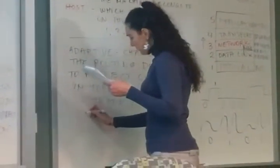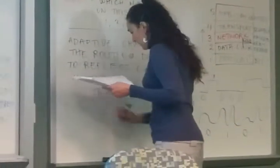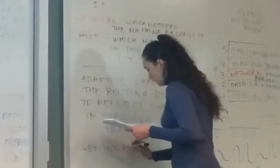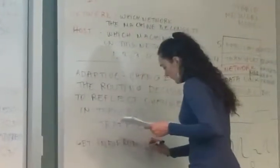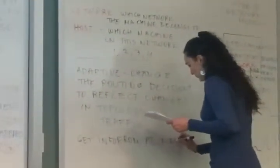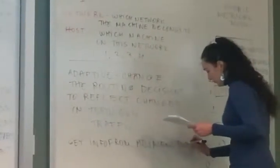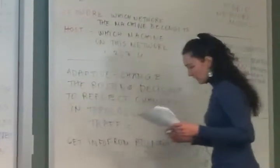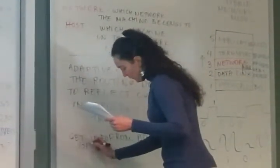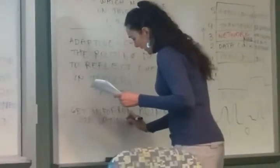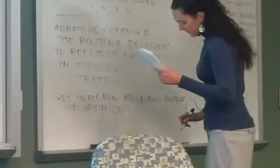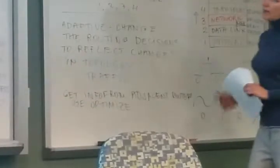So they get information from adjacent routers, and use this to optimize the routing tables. The path, the way they calculate the path from the sender to the receiver.